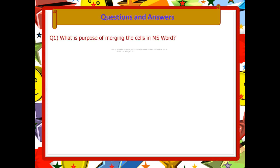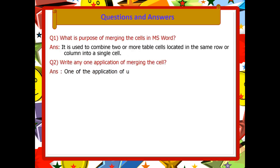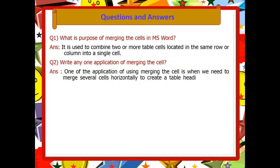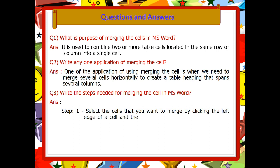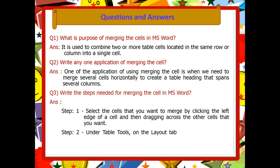Questions and Answers. Question 1: What is the purpose of merging the cells in MS Word? It is used to combine 2 or more table cells located in the same row or column into a single cell. Question 2: Write any one application of merging the cell. One application is when we need to merge several cells horizontally to create a table heading that spans several columns. Question 3: Write the steps for merging cells. Step 1: Select the cells by clicking the left edge of a cell and dragging across the others. Step 2: Under Table Tools on the Layout tab, in the Merge group, click Merge Cells.